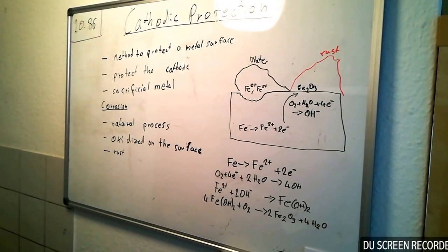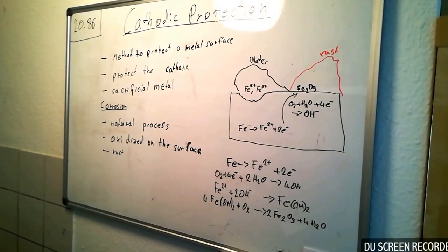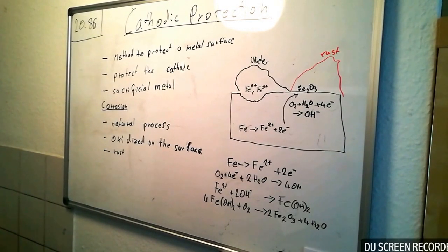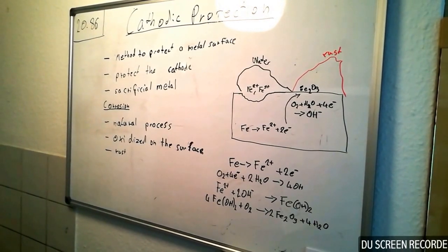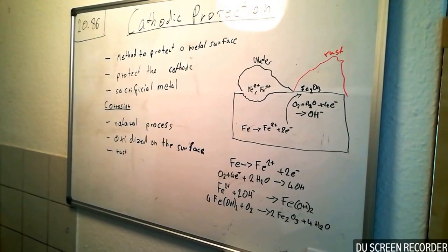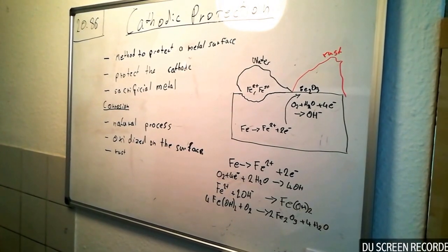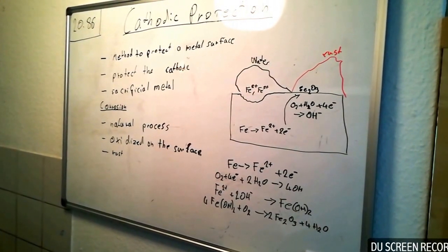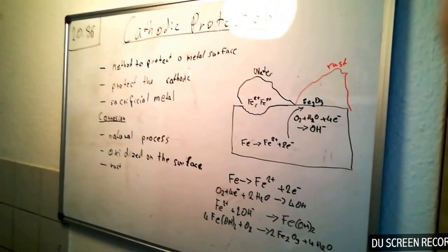But first of all, I want to point out the question: what is corrosion? Corrosion is a natural process where a metal oxidizes, like iron. It oxidizes on the surface to a red-brown color, like in rust.